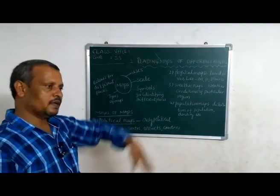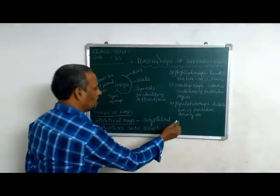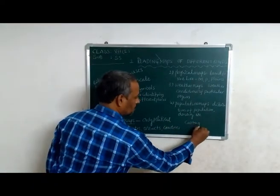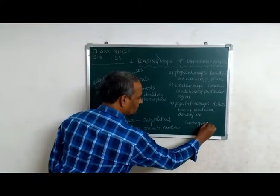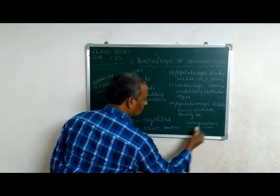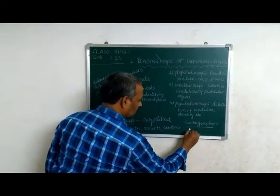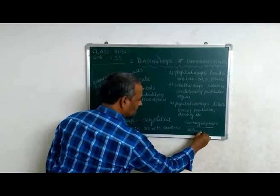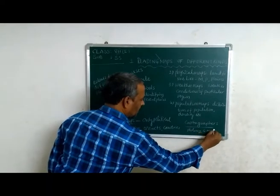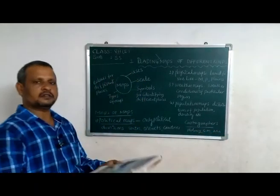Those who are preparing and studying maps — what do you call them? Cartographers. Do you know the names of famous cartographers of the world? They include Ptolemy, Gerardus Mercator, and Anaximander. Those are the famous cartographers.